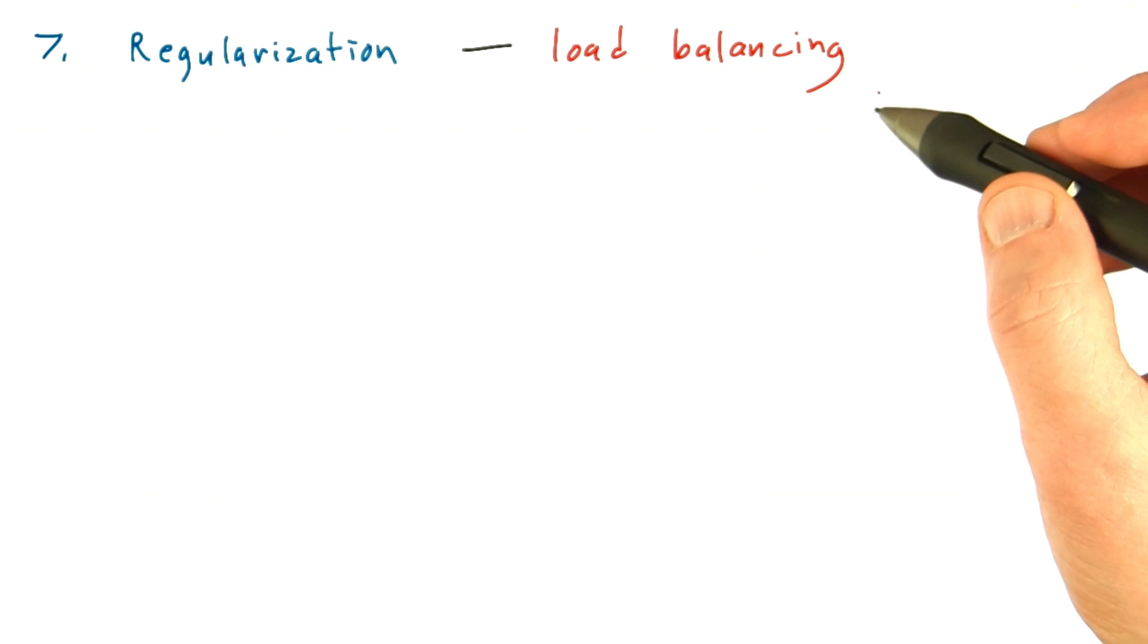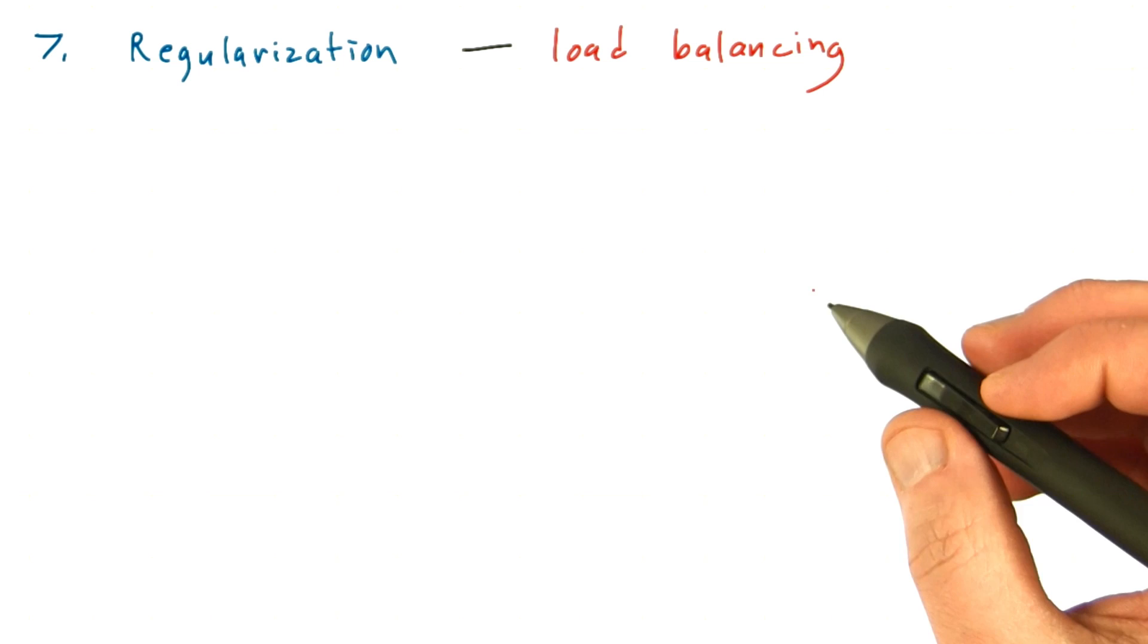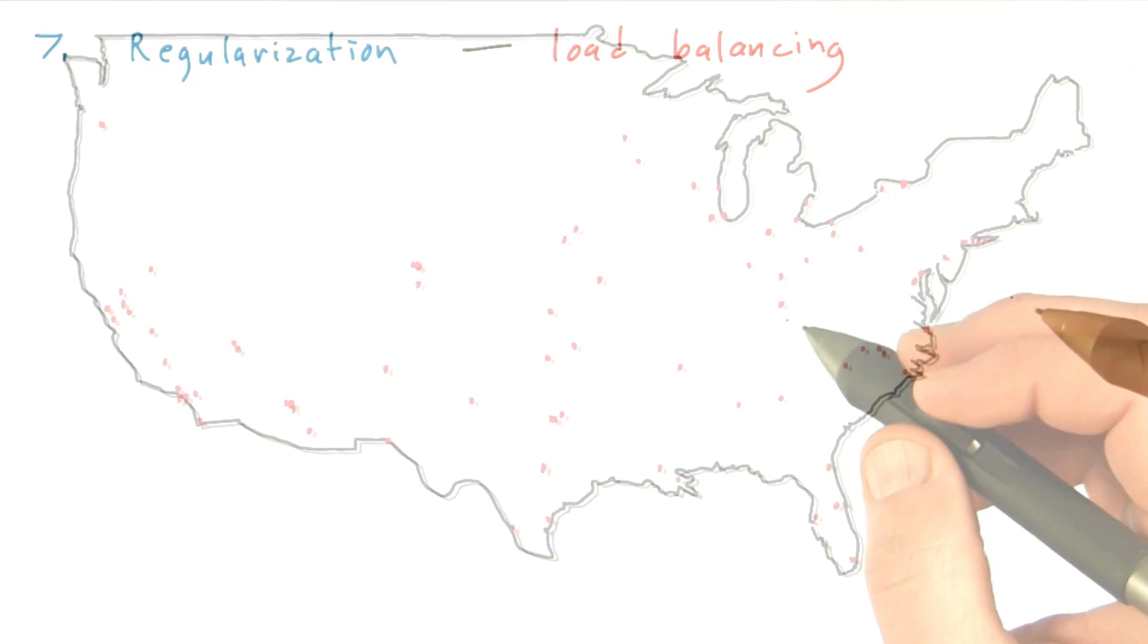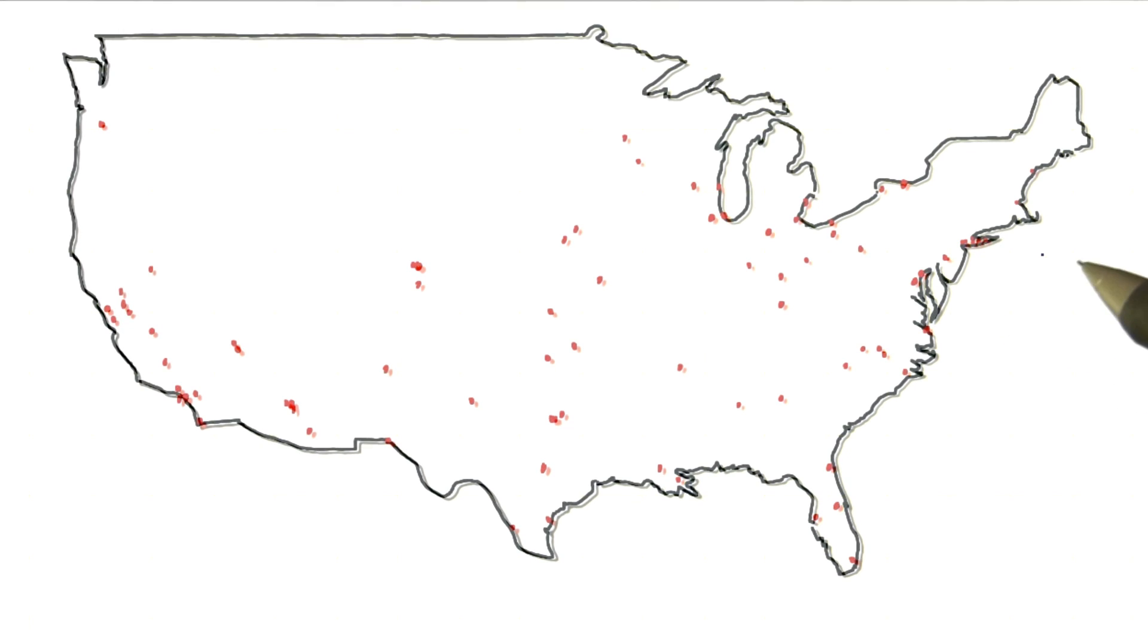Now, to illustrate the idea of load imbalance, let's go back to our example for technique 5, where we were binning the cities of the United States. If you look at this map, you'll notice that the cities aren't spread out evenly.